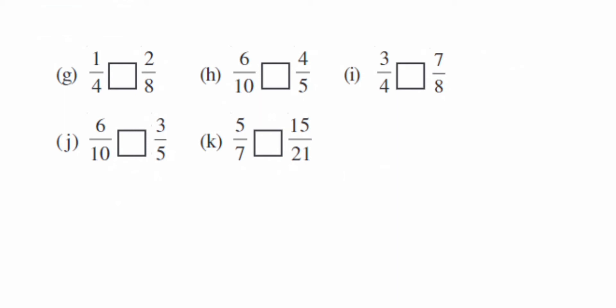Next we have 1 by 4 and 2 by 8. So again, 2 by 8 I can cancel, bring it to reduced form. We'll get 1 by 4, so it will be equal.